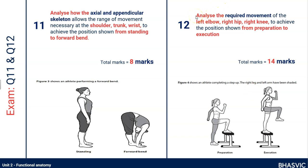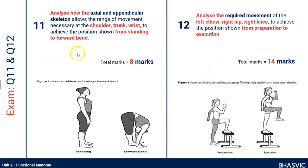Question 12 is phrased similarly but slightly different — instead of 'analyse how the parts of the skeleton,' it says 'analyse how the required movement.' The difference between question 11 and 12 is that both require the same skeletal information, but question 12 also asks you to include information about the muscular system enabling the movement. So this is a musculoskeletal analysis rather than just a skeletal analysis. Because you've got to do more, you get more marks — 14 marks are available for this type of question.